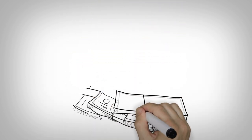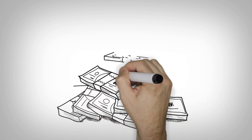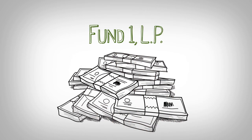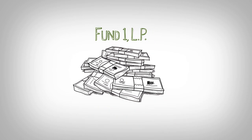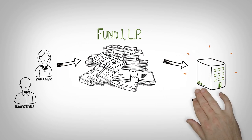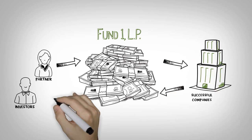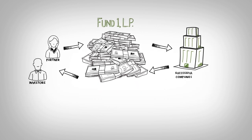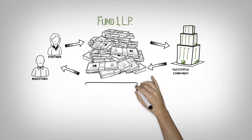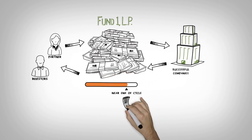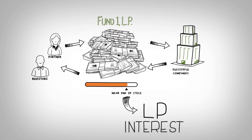Let's take a look at the first scenario. The capital raised to invest in these companies is put into a fund — we'll call it Fund 1 LP. As these companies mature and sell for profit, the distributions flow to the fund and then ultimately to the investors and fund managers. In this scenario, the investor or partner can contribute their interest to a DAF when their LP fund interest is near the end of its cycle.